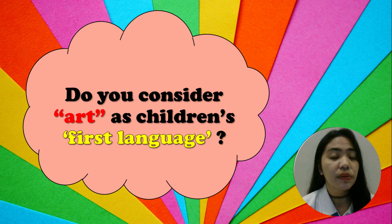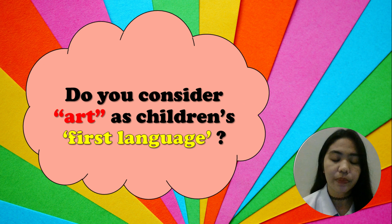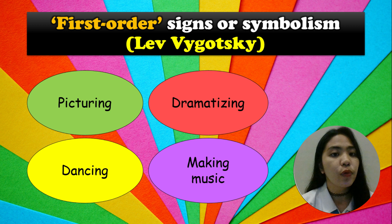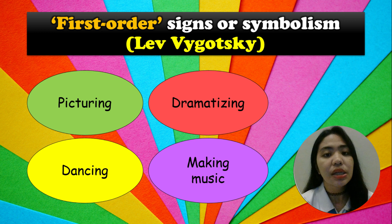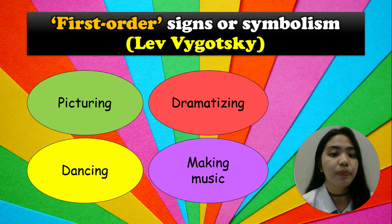You may comment your answers in the comment section below or at the side of your screen. If we ignore these first languages — the art and play of children — it blinds us to the complex, abstract, and sophisticated thoughts and feelings of children as they work with first order signs or symbolism such as picturing, dramatizing, dancing, and making music. That is according to Vygotsky.